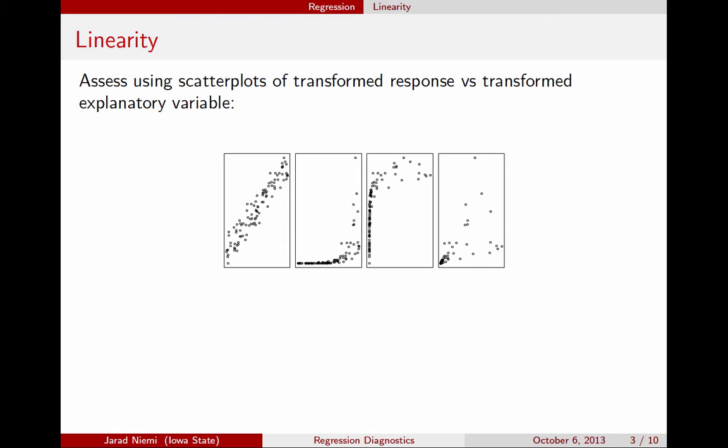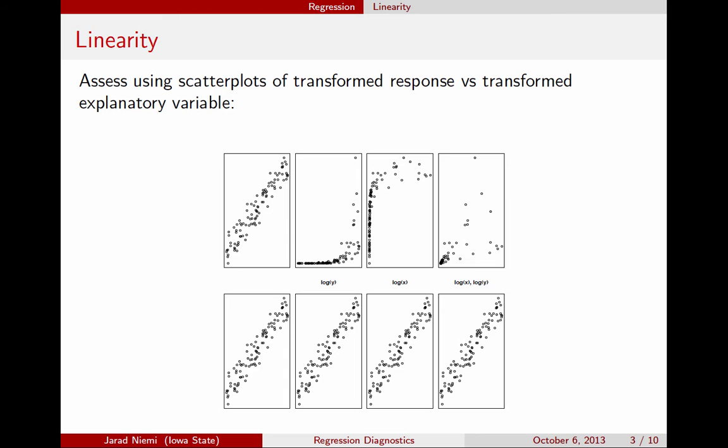One of the things that we can do, one of the common tricks when you see response versus explanatory variables that don't look very linear, is to think about taking logarithms. This is a common technique for getting things to look more linear than they would otherwise. In fact, all of these data sets were constructed by essentially taking the anti-log or taking the exponential. And so if we do take the log in the right form, we get exactly the same data set back. In this case, we had to take the log of the response. In this case, we had to take the log of the explanatory variable. And in this case, we had to take the log of both.